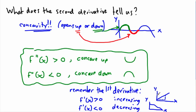You might ask: why stop there? Can we take a third derivative? You can, just like razors going from one blade to two to three to four. But with derivatives, you can pretty much stop at the second, because the first and second derivatives tell us the useful things. You could take a third, fourth, or fifth derivative if you feel like it, but it's not very useful for us. The most common things you'll be doing are the first and second derivatives.